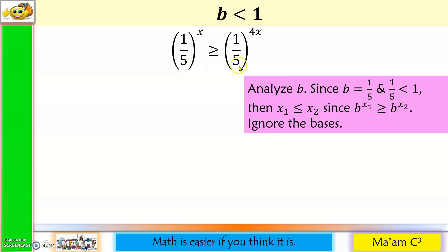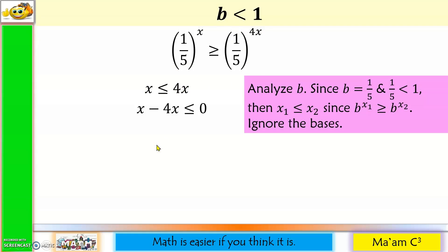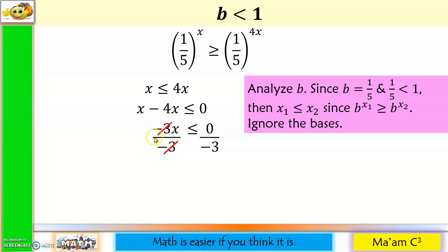Next step: let us analyze our base. Our base is 1 fifth, and that is less than 1. So x sub 1 will be less than or equal to x sub 2, because b raised to x sub 1 is greater than or equal to b raised to x sub 2. Let us ignore the bases and focus on the exponents, but don't forget to reverse the inequality symbol — because our base is 1 fifth, which is less than 1. Let us solve for x: let us move 4x to this side. x minus 4x is less than or equal to 0.